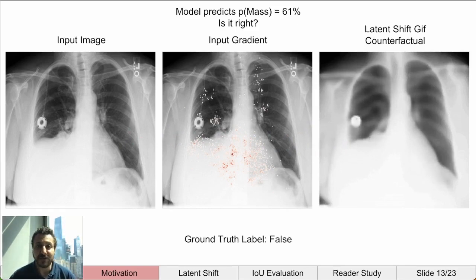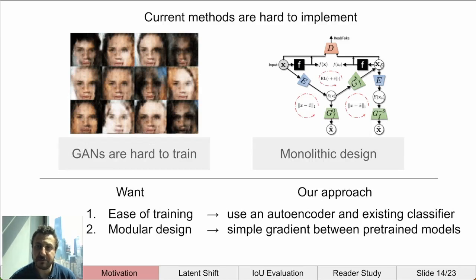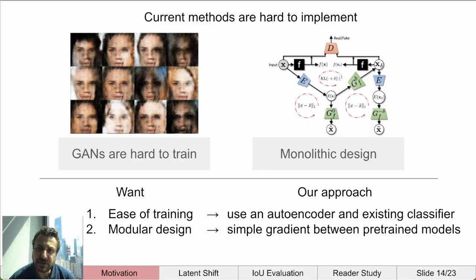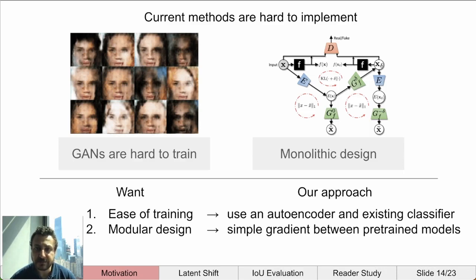However, generating counterfactuals is very difficult, as existing methods are hard to implement. They often require GANs, which can be very difficult to train, or they are monolithic and require joint training with the classifier. Our approach aims to address both of these issues. The focus of this work is to create the most simple counterfactual generation method so that it is easy to implement across domains. We use a vanilla autoencoder with a basic reconstruction loss, and then compute a simple gradient update using the trained decoder and any classifier — which we call the latent shift method.